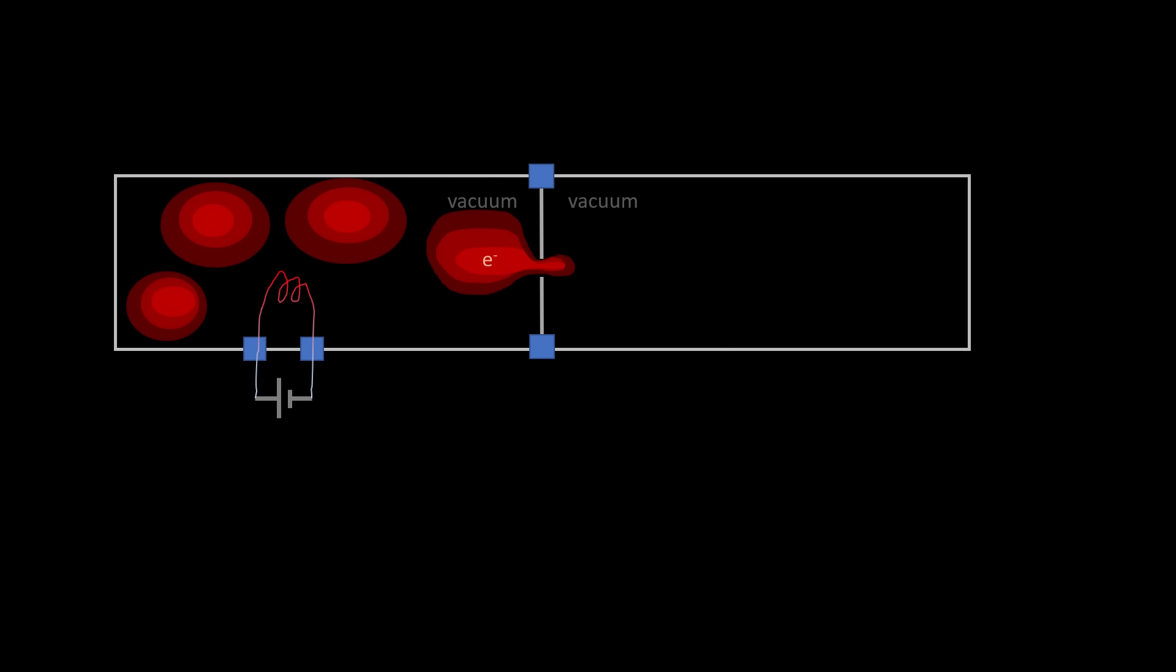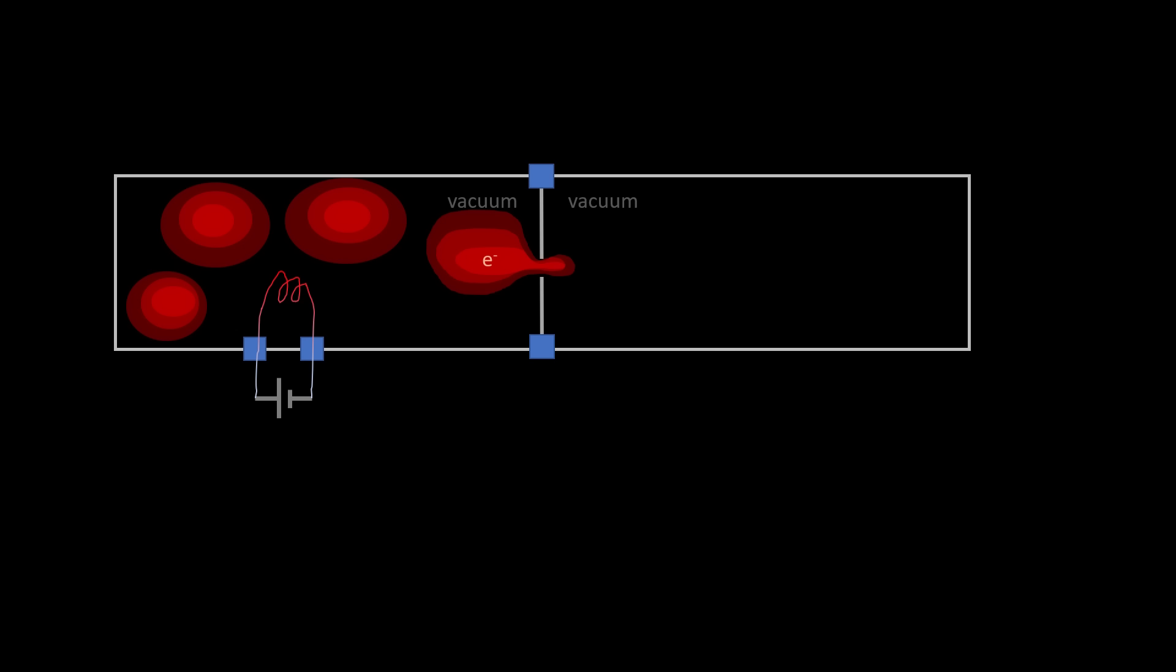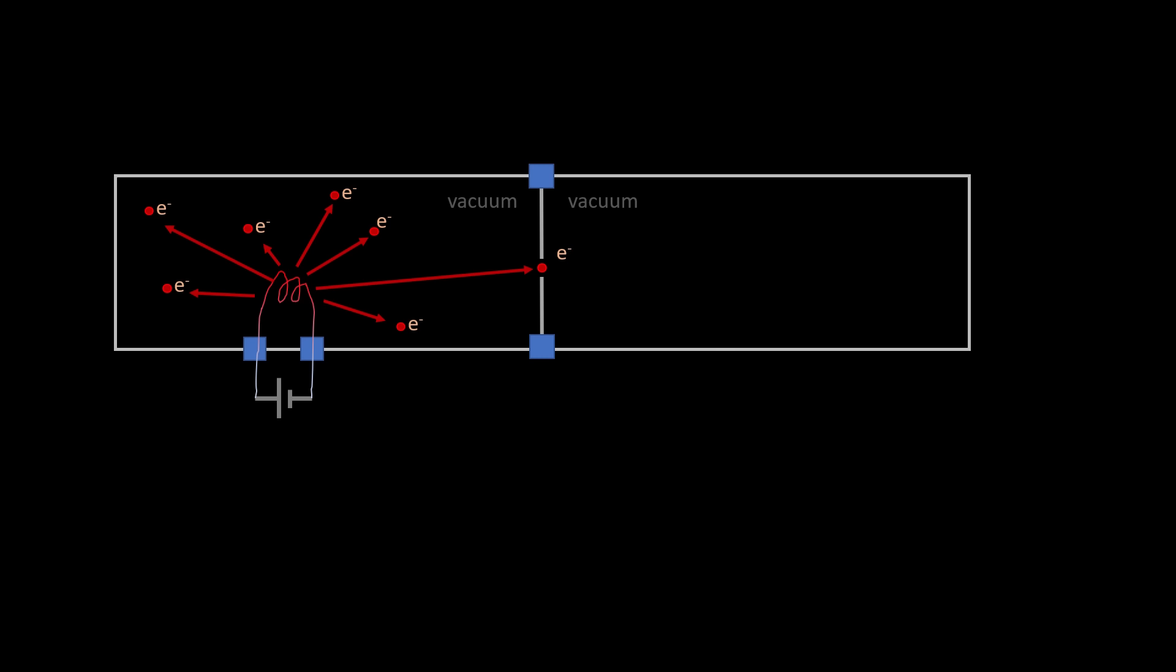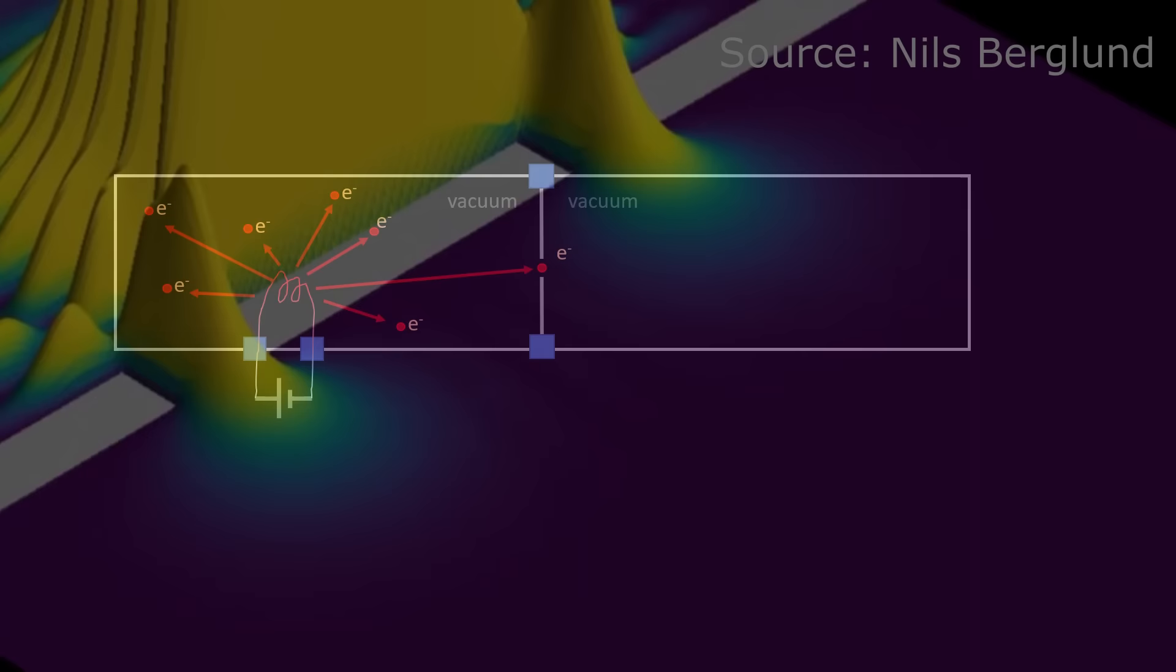For example, in the experiment we cannot distinguish between an electron having a probability distribution that extends in space up or beyond the hole, or it being a localized particle that, merely due to classical stochastics, happens to be at that particular location.